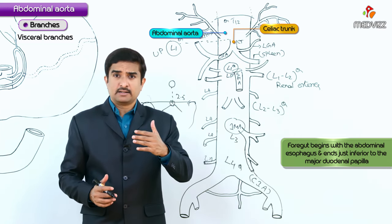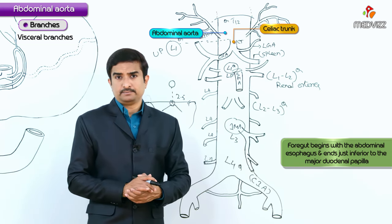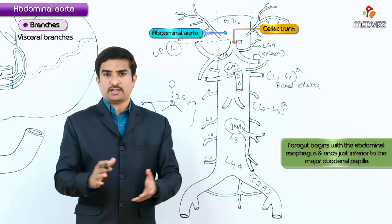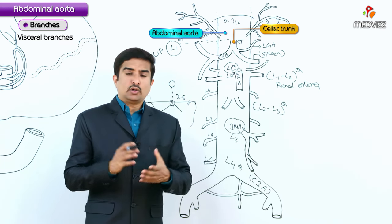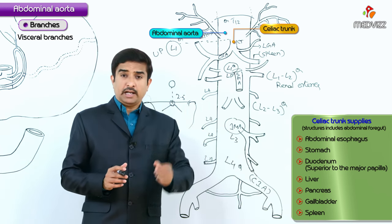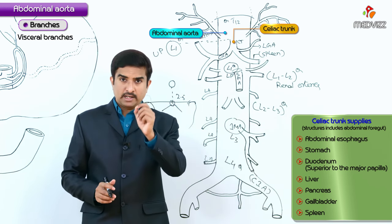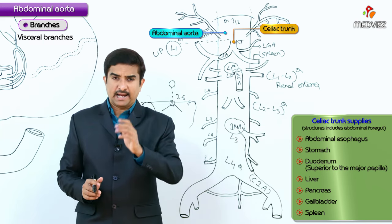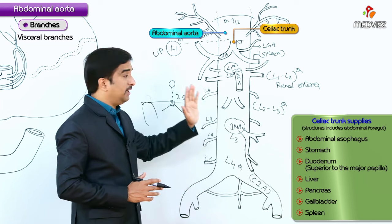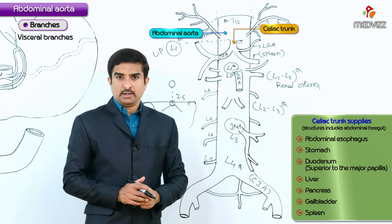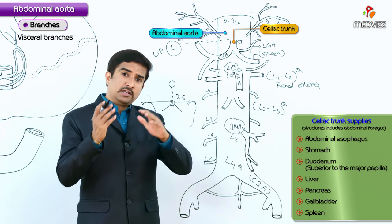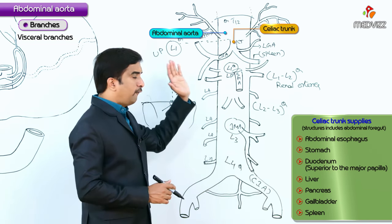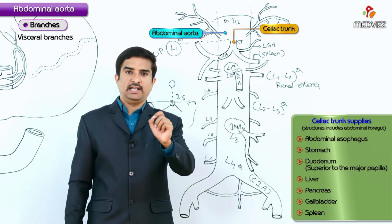The abdominal foregut extends from the abdominal part of the esophagus and ends just inferior to the major duodenal papilla. The structures it includes are: the abdominal part of the esophagus, stomach, duodenum superior to the major duodenal papilla, liver, pancreas, gallbladder, and the spleen — since the spleen develops in relation to the foregut and is supplied by the splenic artery, a branch of the celiac trunk.